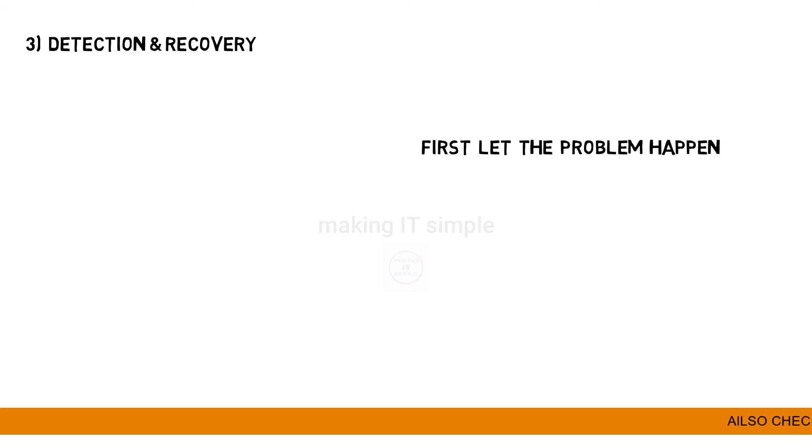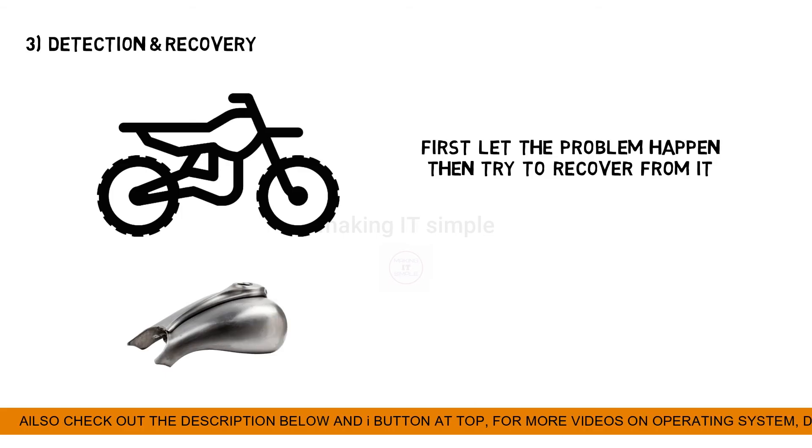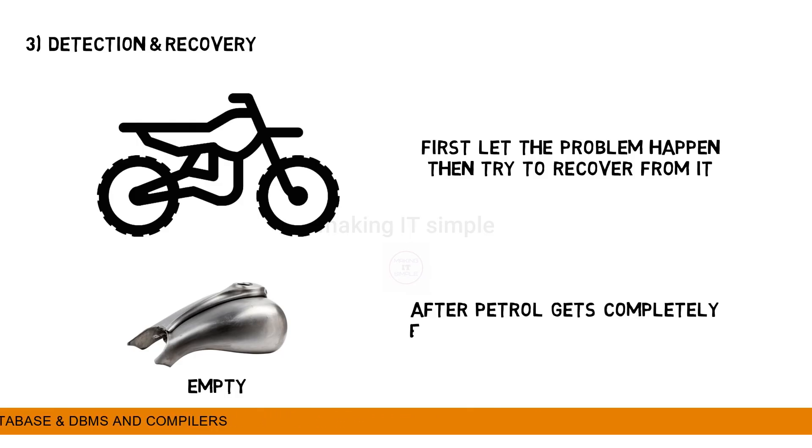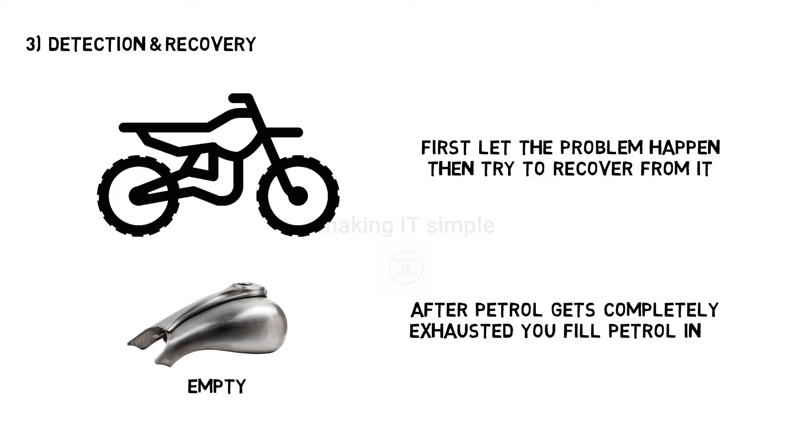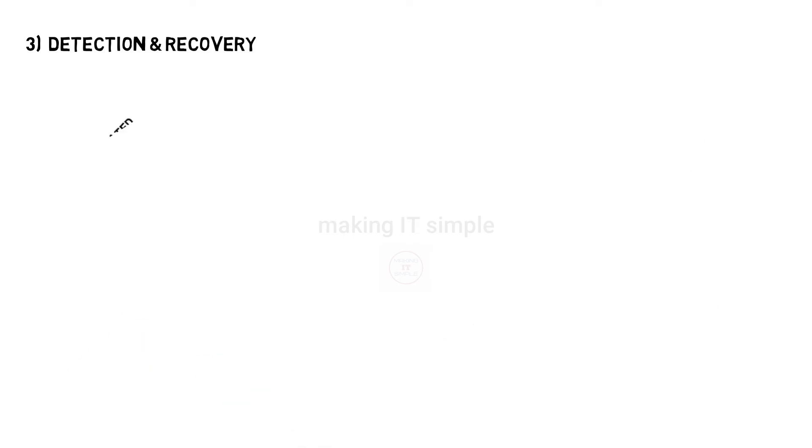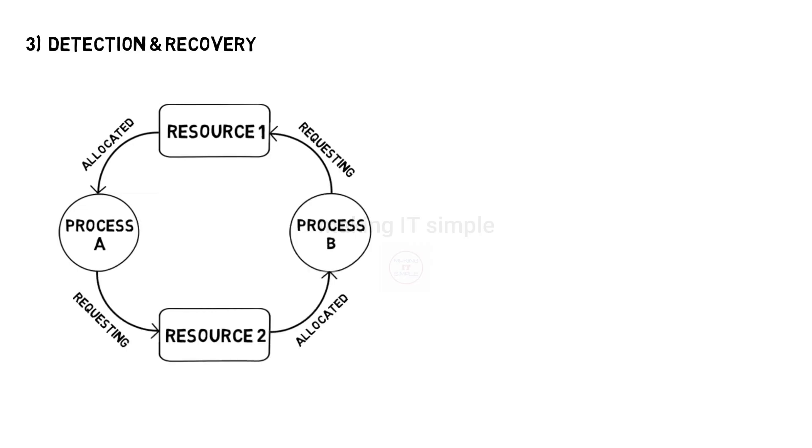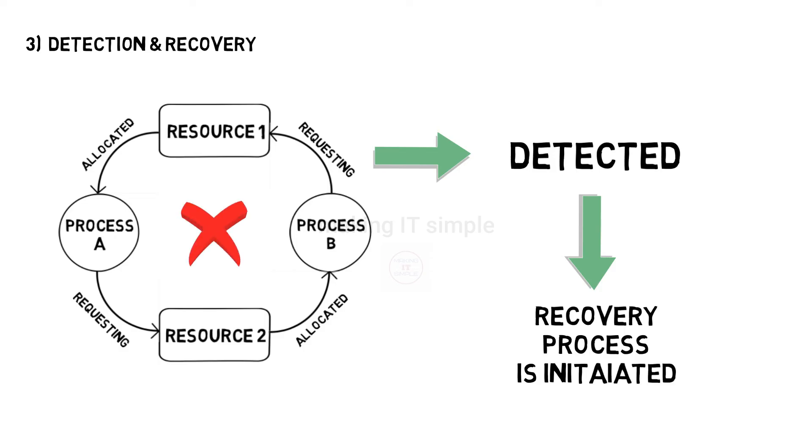Third approach is detection and recovery. In this approach we wait until the problem occurs and then try to solve it. That means if you are riding a bike, you will wait until the petrol tank gets completely empty and the bike stops. When there is no petrol left in the bike and it won't start, then you fill petrol in it. This is how we solve it by detection and recovery. Once we detect the problem, after that we implement the recovery. In operating system when we use this approach, we wait until deadlock occurs. Once it occurs, it gets detected, and whatever recovery process is present is initiated, and the deadlock is removed from the system.